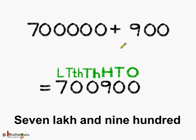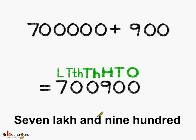So let's write it down correctly by putting the digits at their correct places. How many ones? 0 ones. How many tens? 0 tens. How many hundreds? 9 hundreds, so put 9 at the hundreds place. How many thousands? None. How many ten-thousands? None. Lastly, there are 7,00,000s, so put 7 at the hundred-thousands place. What do we get? 7,00,900. This is the correct standard form for 7,00,000 plus 900.